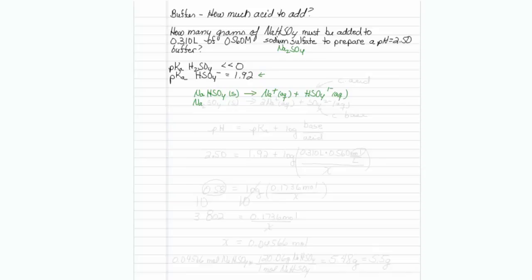When I put sodium sulfate in water, that dissolves up into two sodium ions and a sulfate. So my HSO4 minus, that is going to be my conjugate acid, and my sulfate is going to be my conjugate base.